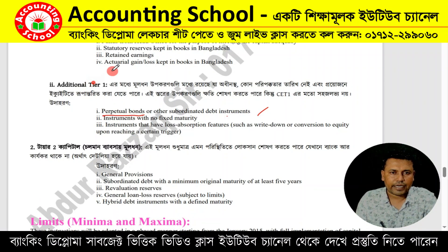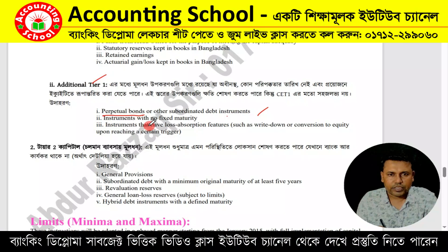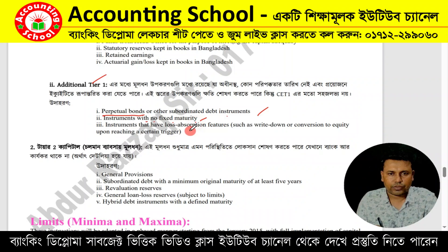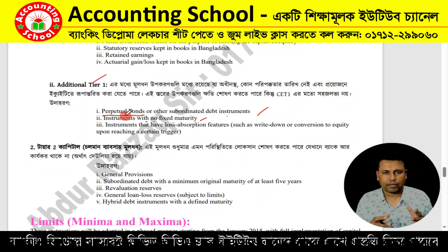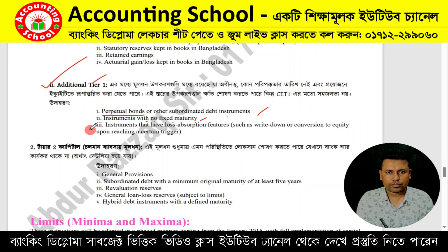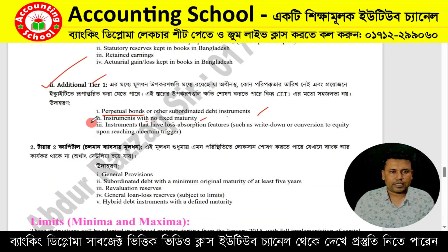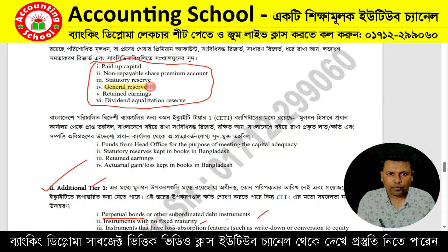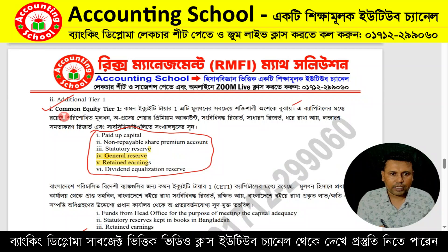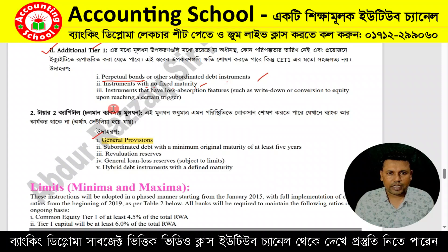Additional Tier 1 includes perpetual bonds and other subordinate debt instruments — instruments with no fixed maturity. After Tier 1, we have Tier 2. Tier 2 includes general provision. Note: general reserve belongs to CET1 (Tier 1), while general provision is classified as Tier 2.